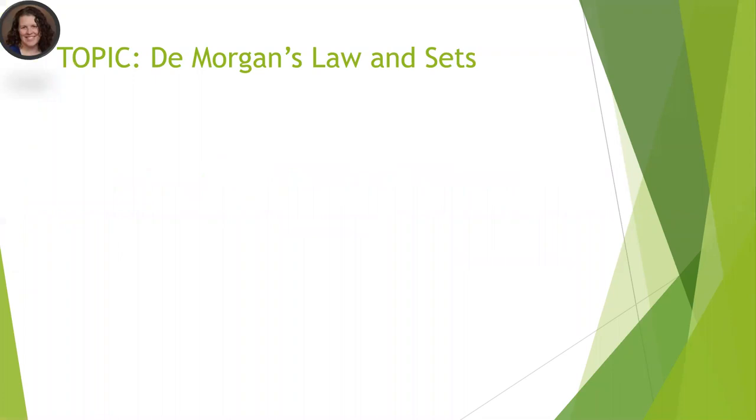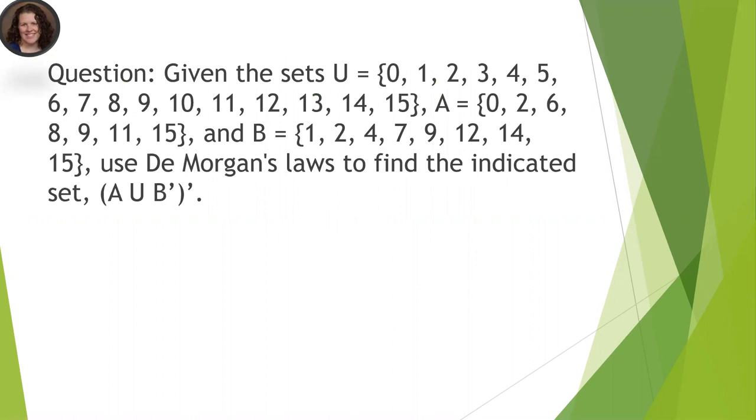Hi everyone, this is Dr. Hess. I'm going to model some three-column notes, and today we're going to talk about DeMorgan's Law and sets. So the question that we're going to be using is this word problem. We're given a set U, a set A, and a set B, and we want to use DeMorgan's Law to find the indicated set.